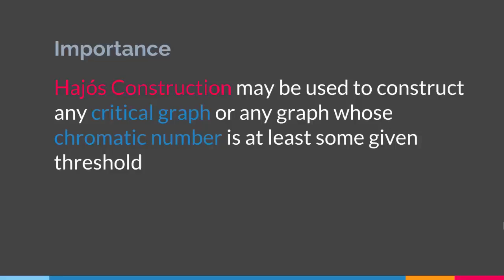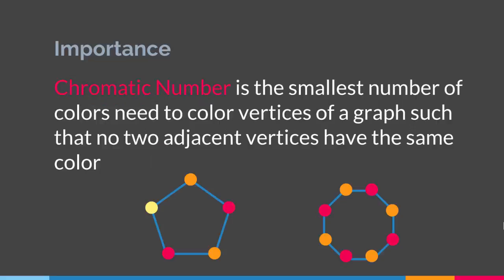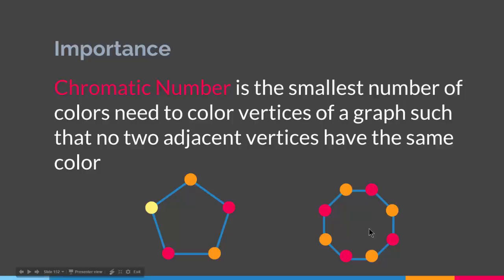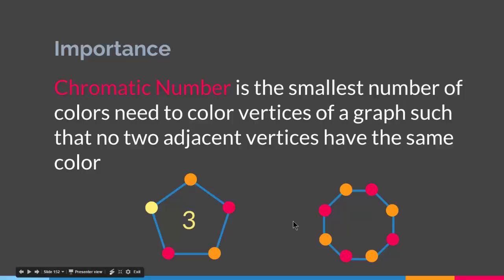So what is a critical graph or chromatic number? A chromatic number is the smallest number of colors needed to color the vertices of a graph such that no two adjacent vertices have the same color. As you can see with these two graphs, I used three colors to color all vertices in one graph such that no two adjacent vertices share a color, but in the other graph — even though it has more vertices and edges — I used only two colors. So the chromatic number of one graph is three and the other is two.